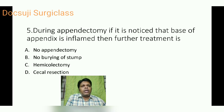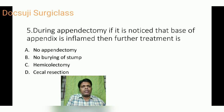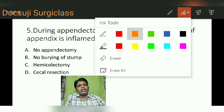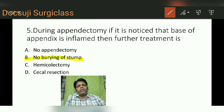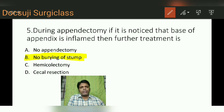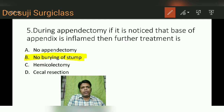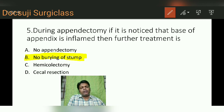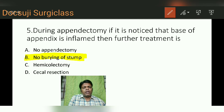The fifth question: during appendicectomy, if it is noticed that the base of the appendix is inflamed, what is the further treatment? Options include: no appendicectomy, no burying of stump, hemicolectomy, or cecal resection. The answer is no burying of the stump. I have a separate video on appendicectomy special circumstances explaining why you should not bury the stump when the base of the appendix is inflamed — the link is in the description.